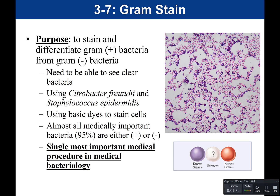For this gram stain activity, we'll be using Citrobacter freundii and Staphylococcus epidermidis. Recall from the aseptic technique video that you would make a slant of Citrobacter freundii and your partner would make a slant of Staphylococcus epidermidis. You would each be responsible for your organism, and then use those two organisms to do your gram stain.